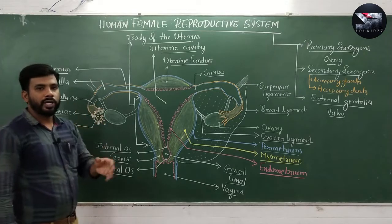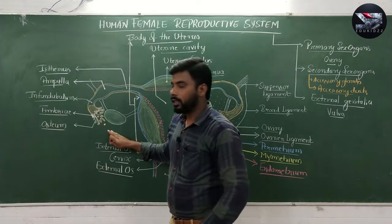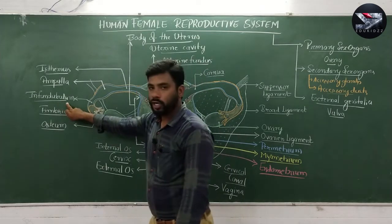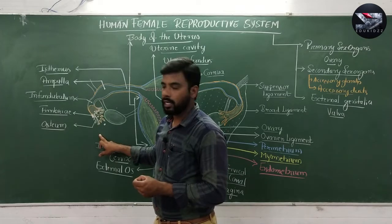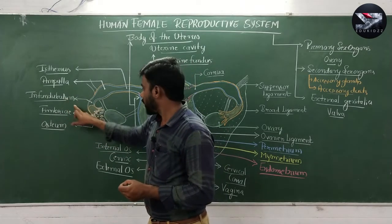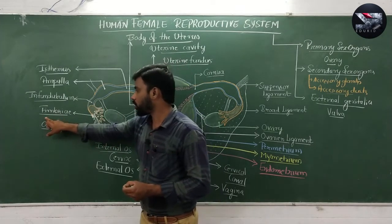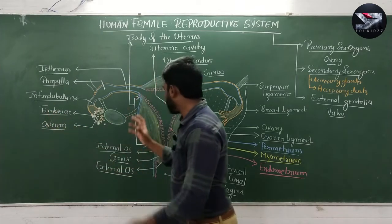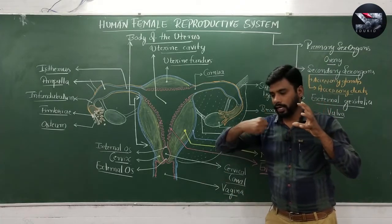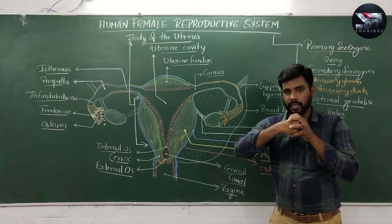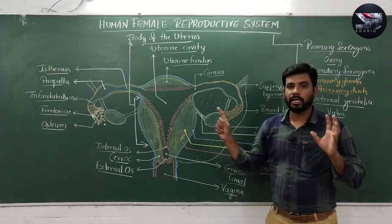First, let us talk about the fallopian tube, which is also called the oviduct. The fallopian tube generally includes the infundibulum — it is a funnel-shaped free end of the oviduct. This infundibulum produces many finger-like projections, which you can see in this diagram; those finger-like projections are called fimbria. There is no functional connection between the ovary and any part of the female reproductive system.